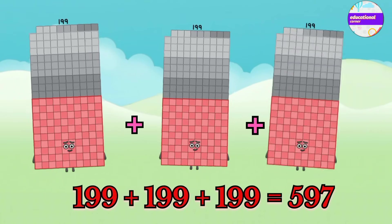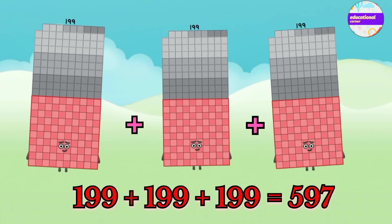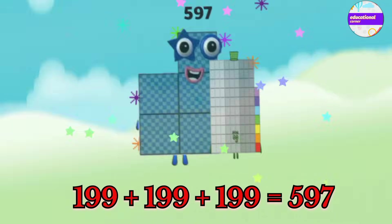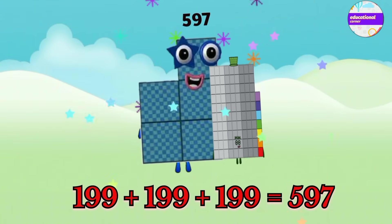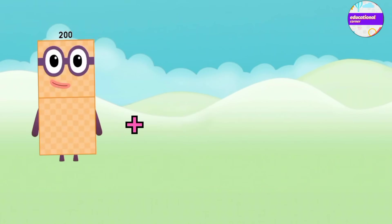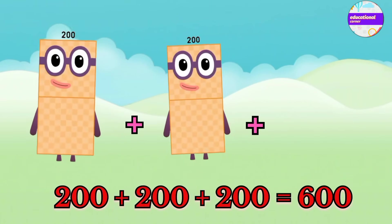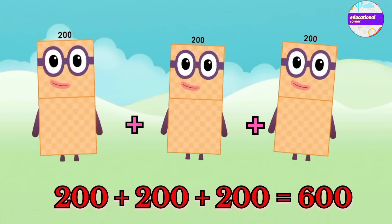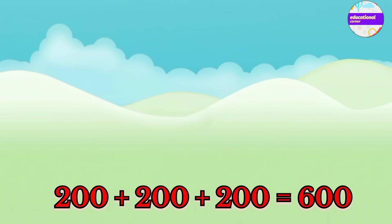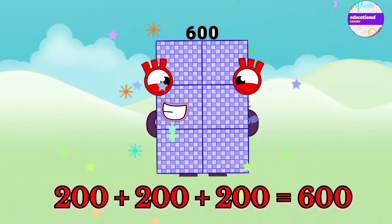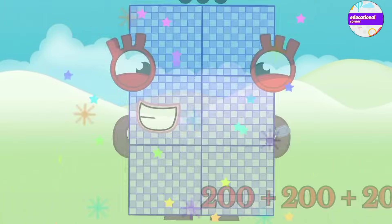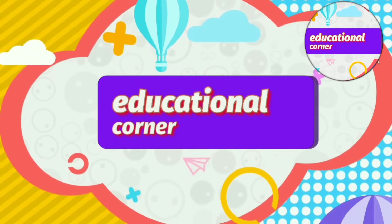199 plus 199 plus 199 equals 597. 200 plus 200 plus 200 equals 600. Amazing! Hope you like the video, bye bye bye.